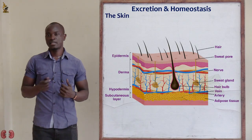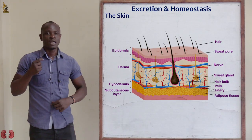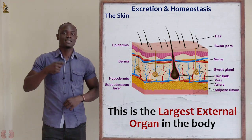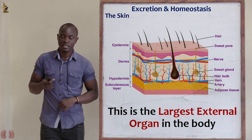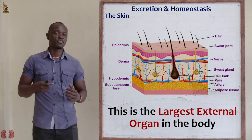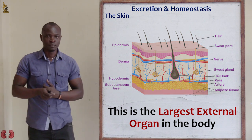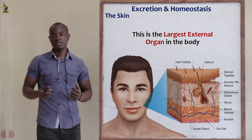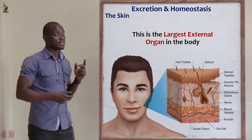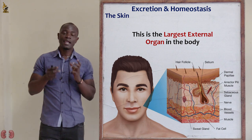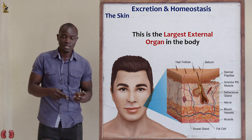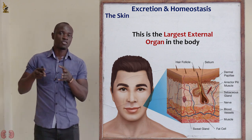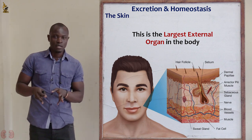Excretion in the skin. How does the skin facilitate the process of excretion? First of all, let's look at the skin. The skin is the largest external organ of the body.